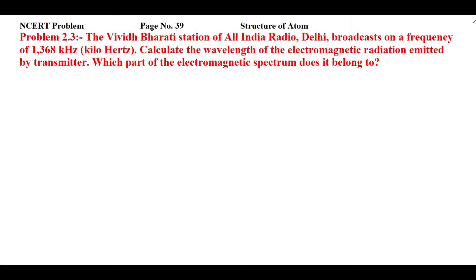Students, this is NCRT problem 2.3 from page number 39 of Structure of Atom. The Vivid Bharti station of All India Radio Delhi broadcasts on a frequency of 1368 kilohertz. Calculate the wavelength of the electromagnetic radiation emitted by the transmitter.